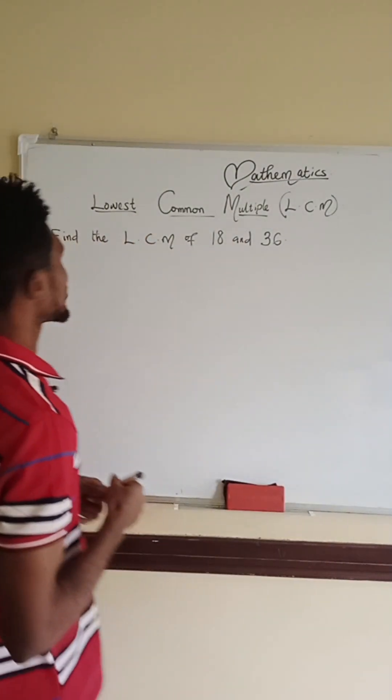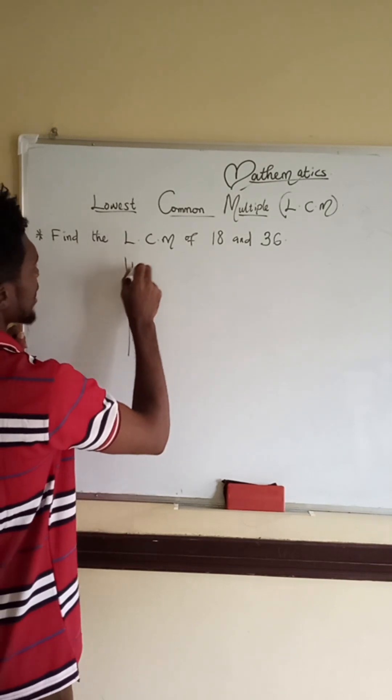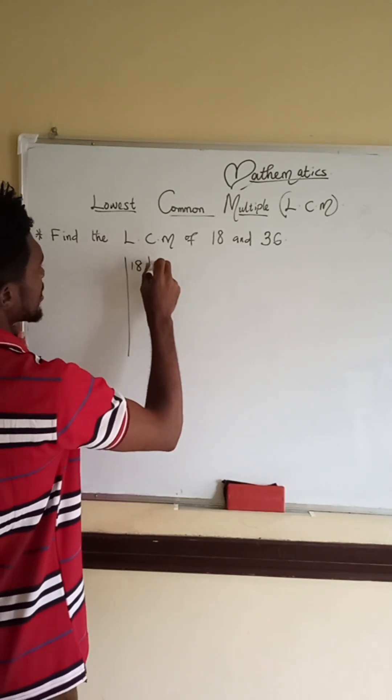What we have to find is the LCM of 18 and 36. So what we do, we write 18 here, then 36 here.